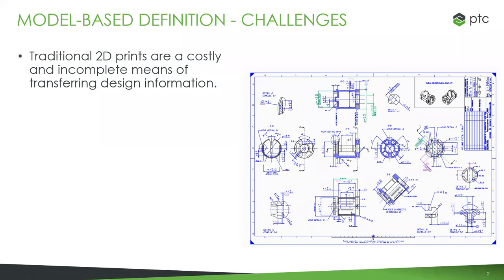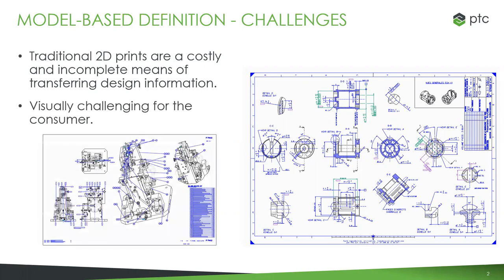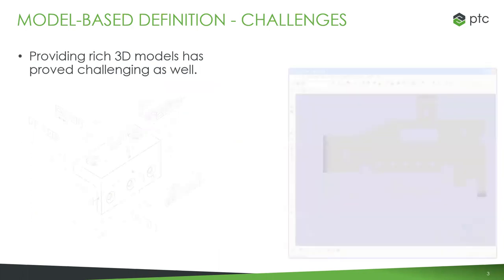It can be difficult to see what a dimension is referring to, what edge is being called out, whether something is a cut or an extrude. Different things can just go wrong. They're hard to keep up to date as you make changes to your model, and important dimensions can fall through the cracks. It can be difficult for the consumer on the other end because it's all over the place. The lines representing your parts are often hard to tell apart and hard to see where different edges are.